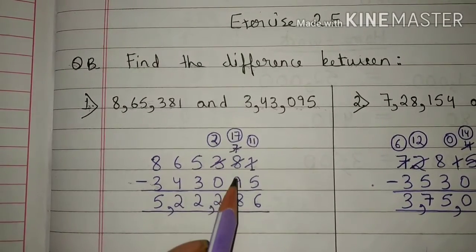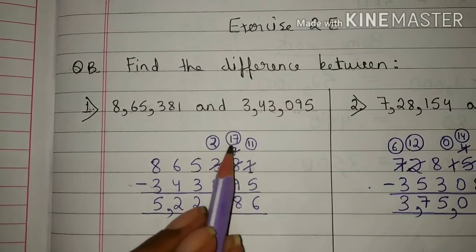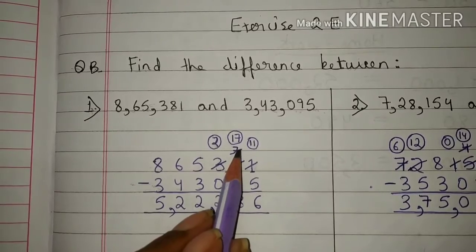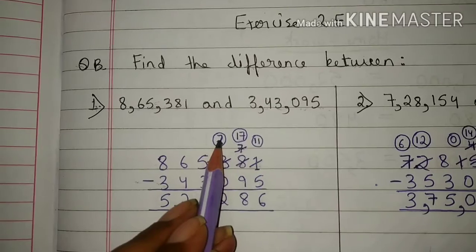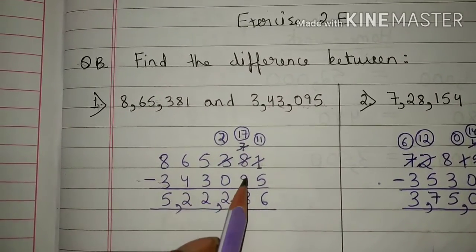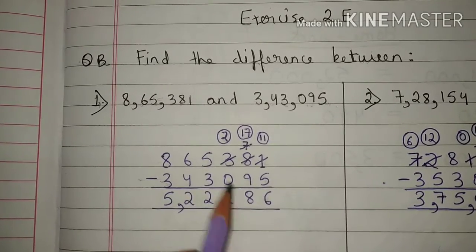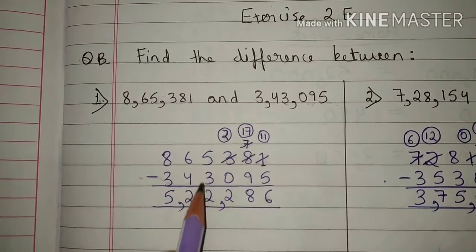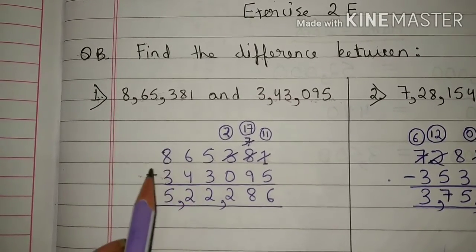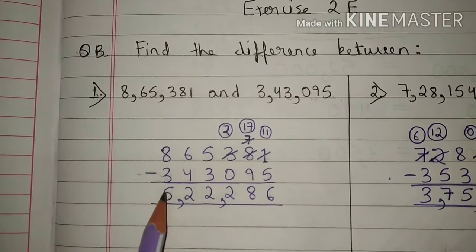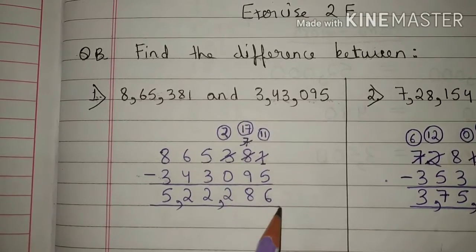Seven is smaller than nine, so we will borrow one number from three to seven. Now seven will become seventeen and three will become two. Seventeen minus nine is eight. Two minus zero is two. Five minus three is two. Six minus four is two. Eight minus three is five. The answer is 5,22,286.